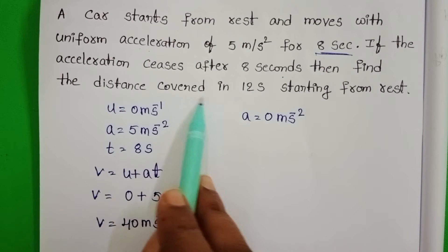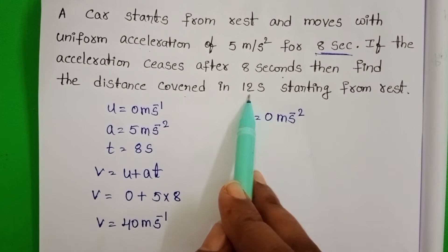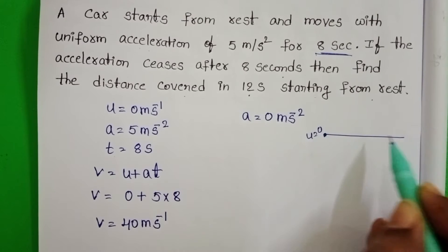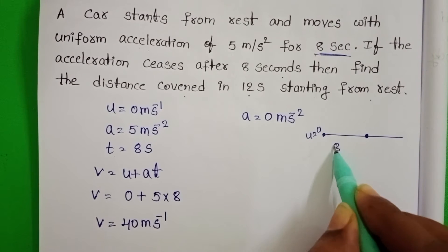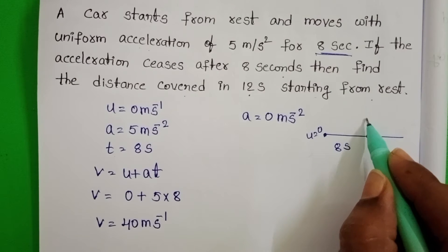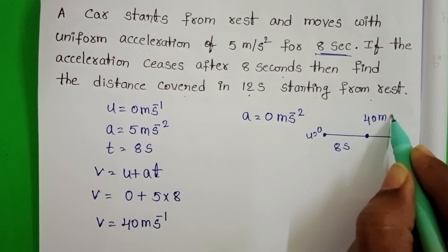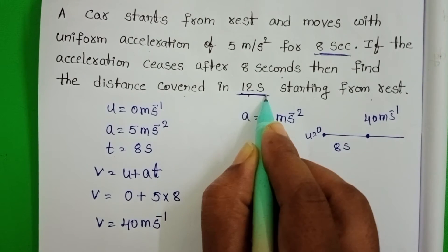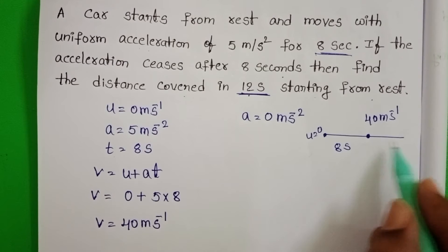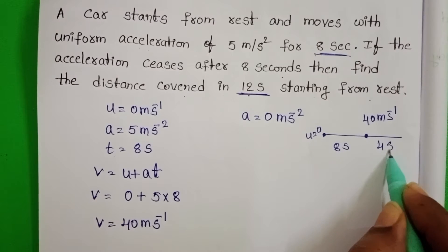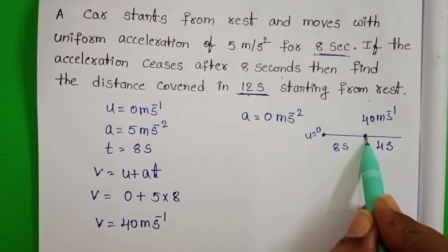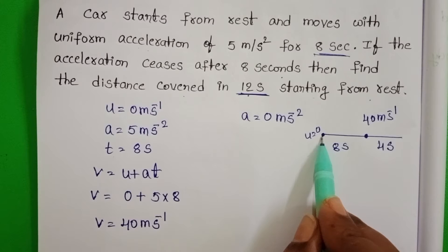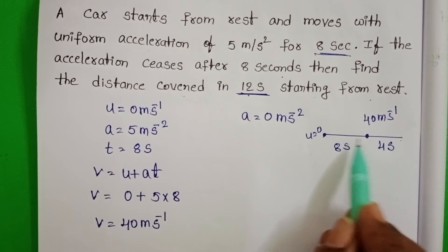We have to find the distance covered in 12 seconds starting from rest. Initially, the car starts from rest, so U = 0. After 8 seconds, the velocity of the car becomes 40 meters per second. But the total journey time is 12 seconds. Already 8 seconds are completed, so the remaining time is 4 seconds. After getting 0 acceleration, the car moves for the next 4 seconds as well. We need to find the total distance from start to 12 seconds.